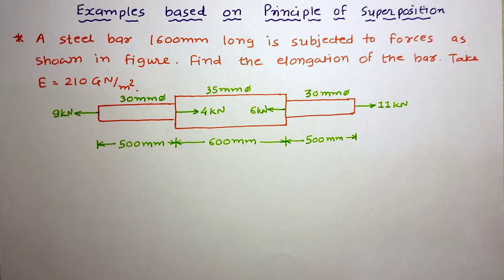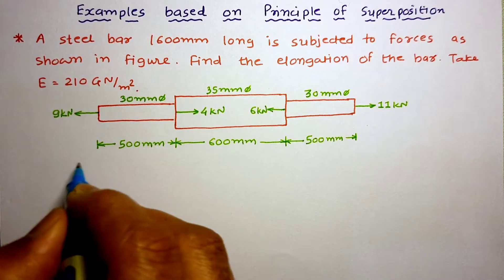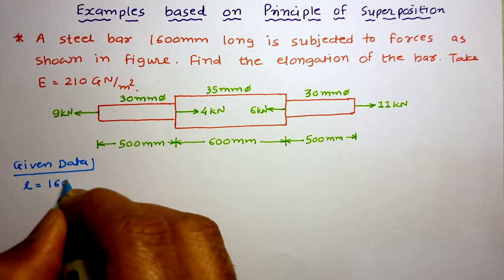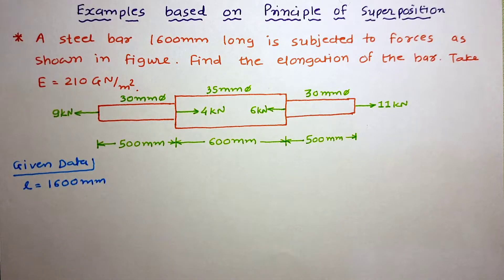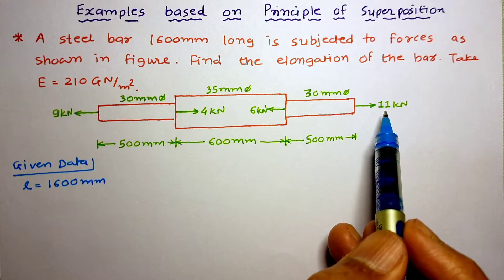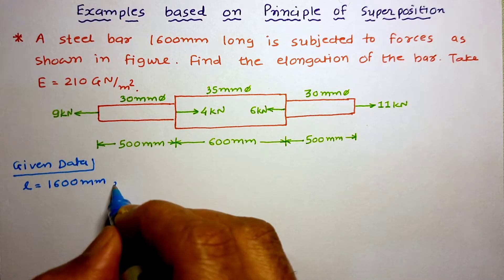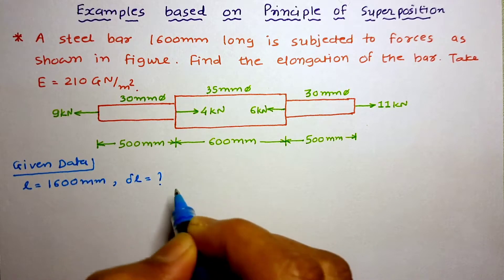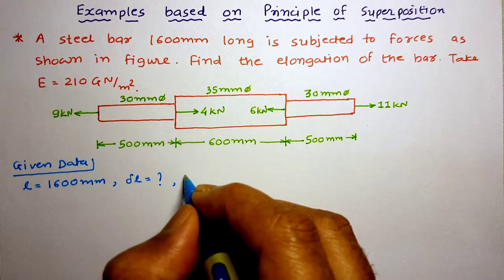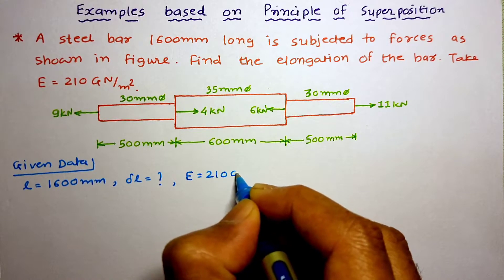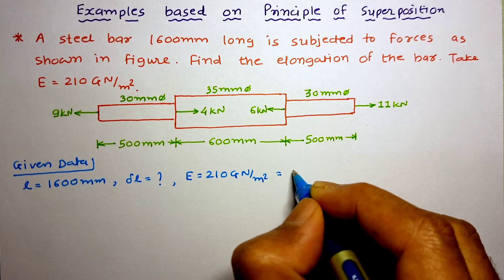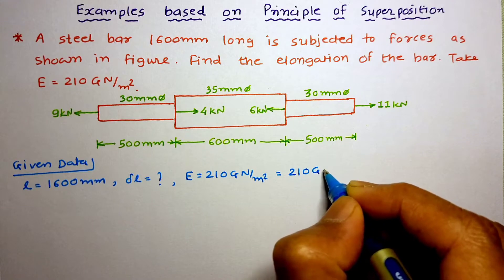So this is the example given to us. We will read the problem and write the given data. A steel bar 1600 mm long, so the length is given L = 1600 mm. It is subjected to forces as shown in the figure. Find the elongation of the bar — we need to work out delta L, the total elongation. Take E = 210 GN/m², which is 210 GPa.